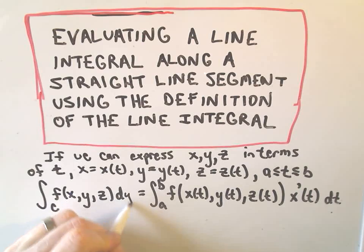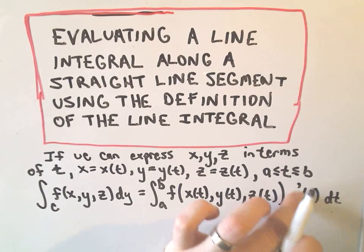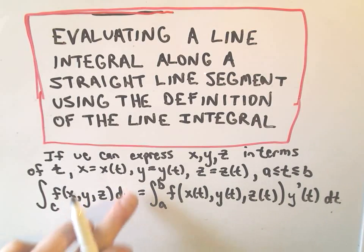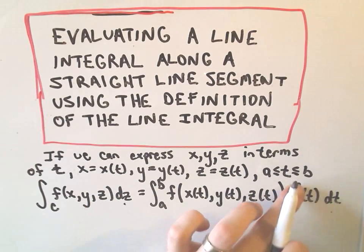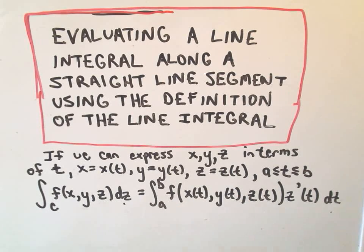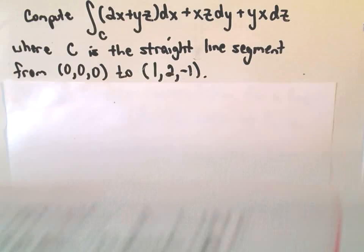Likewise, if this was dy, the only thing that would change is we would have y prime over here. Likewise, if we're doing dz, the only thing that's going to change is it'll be z prime of t.